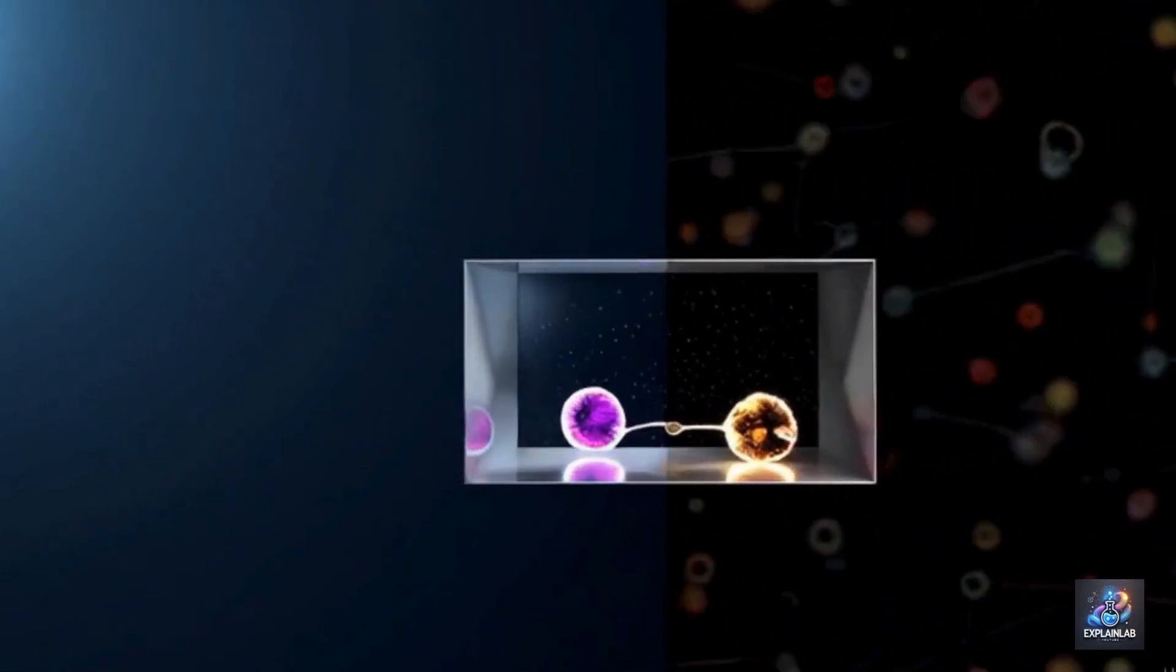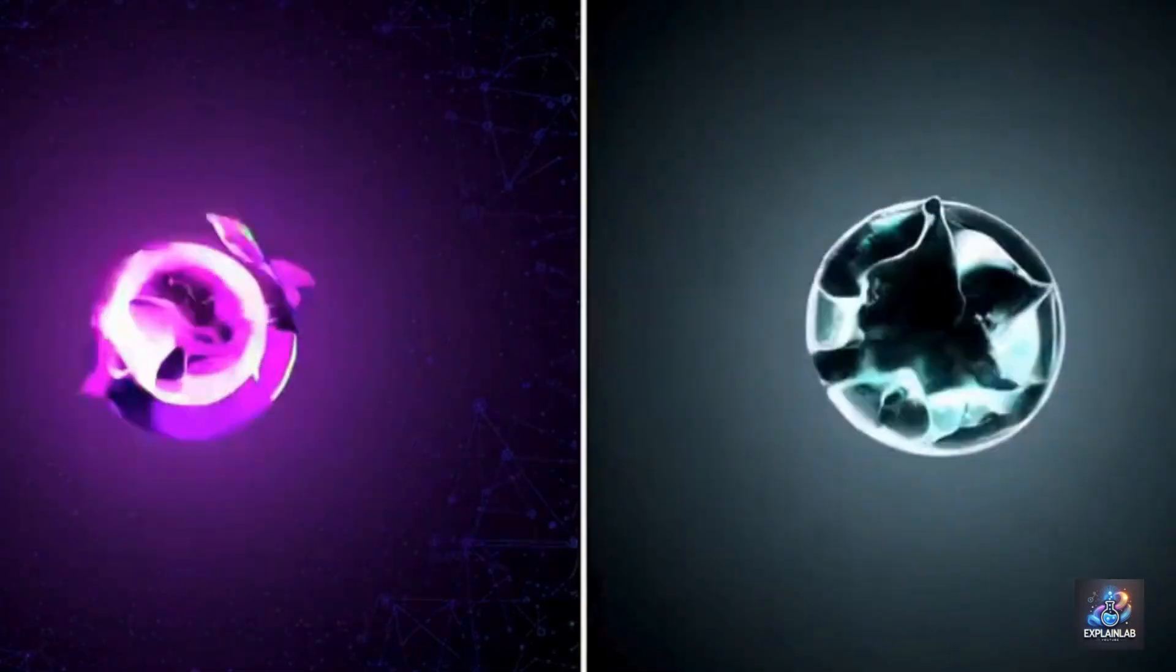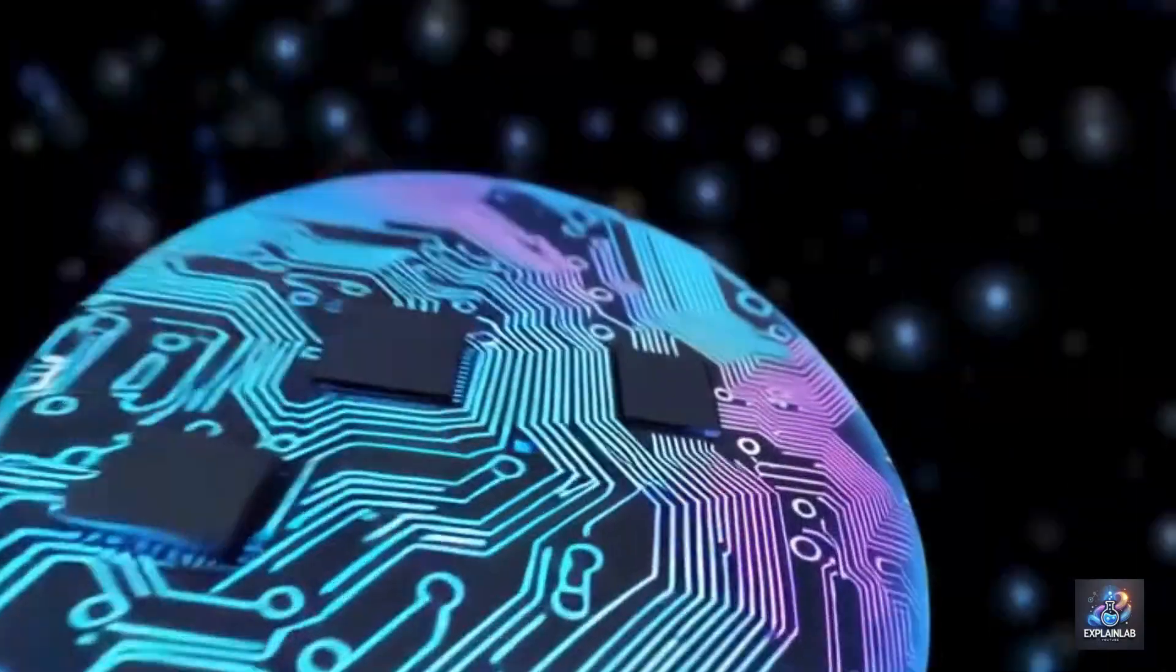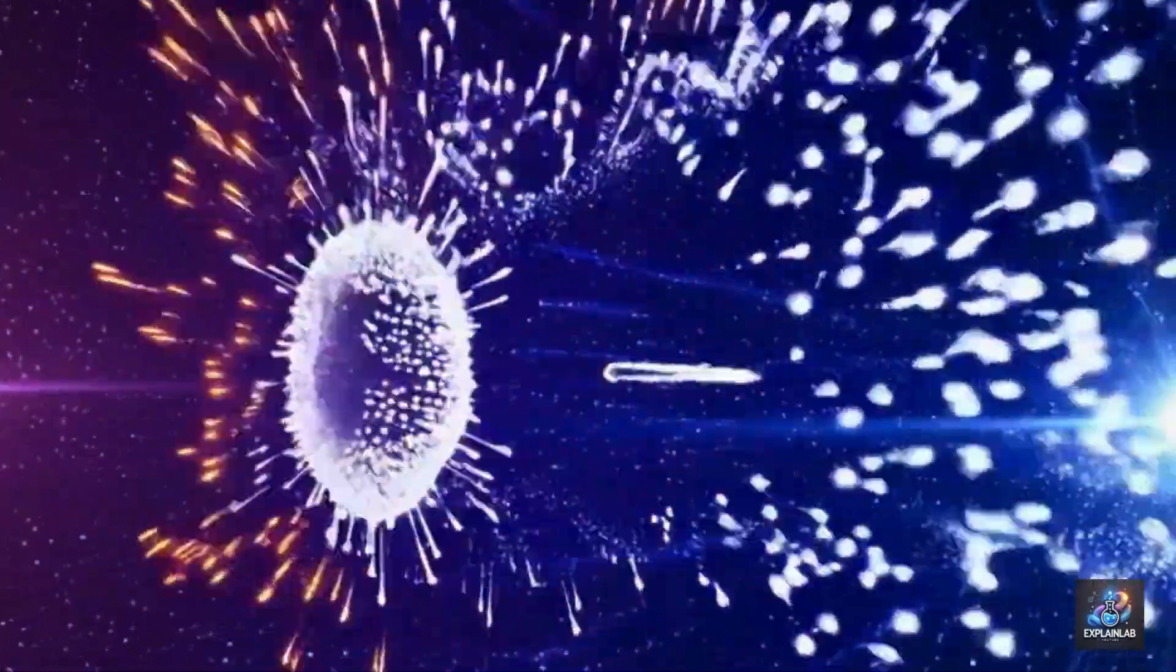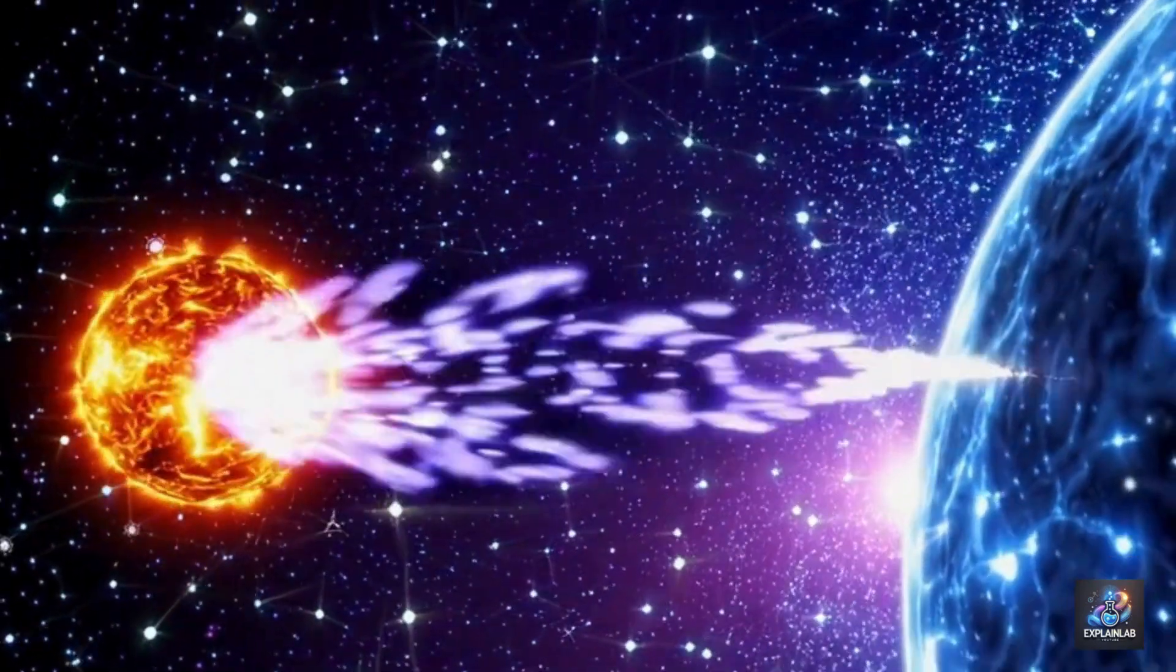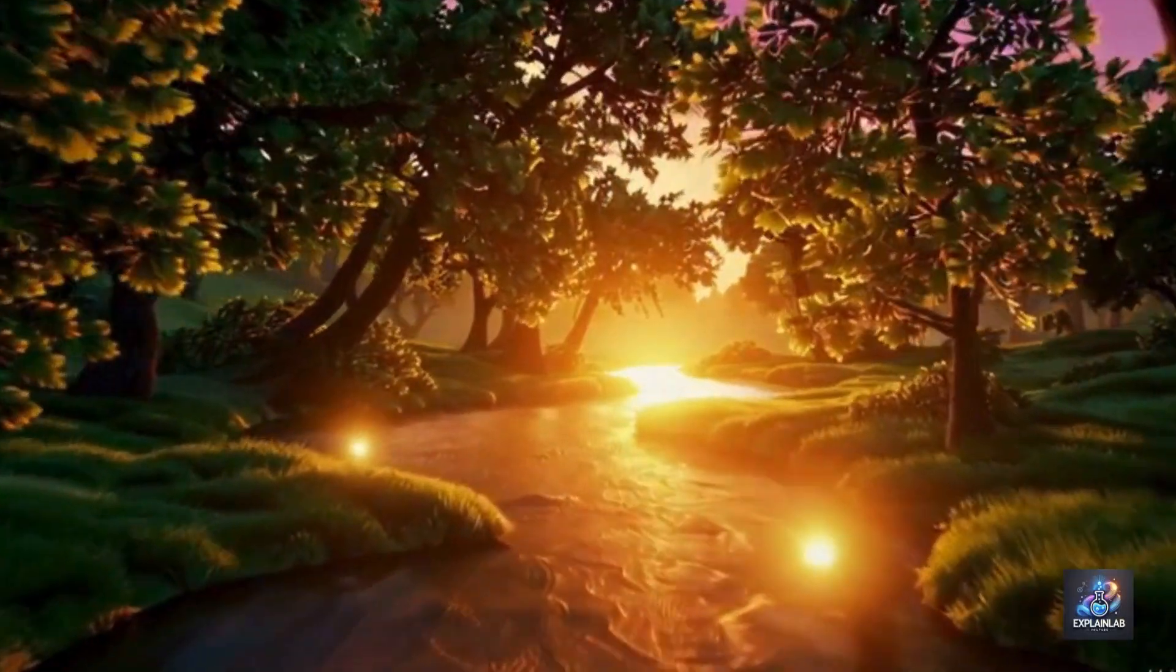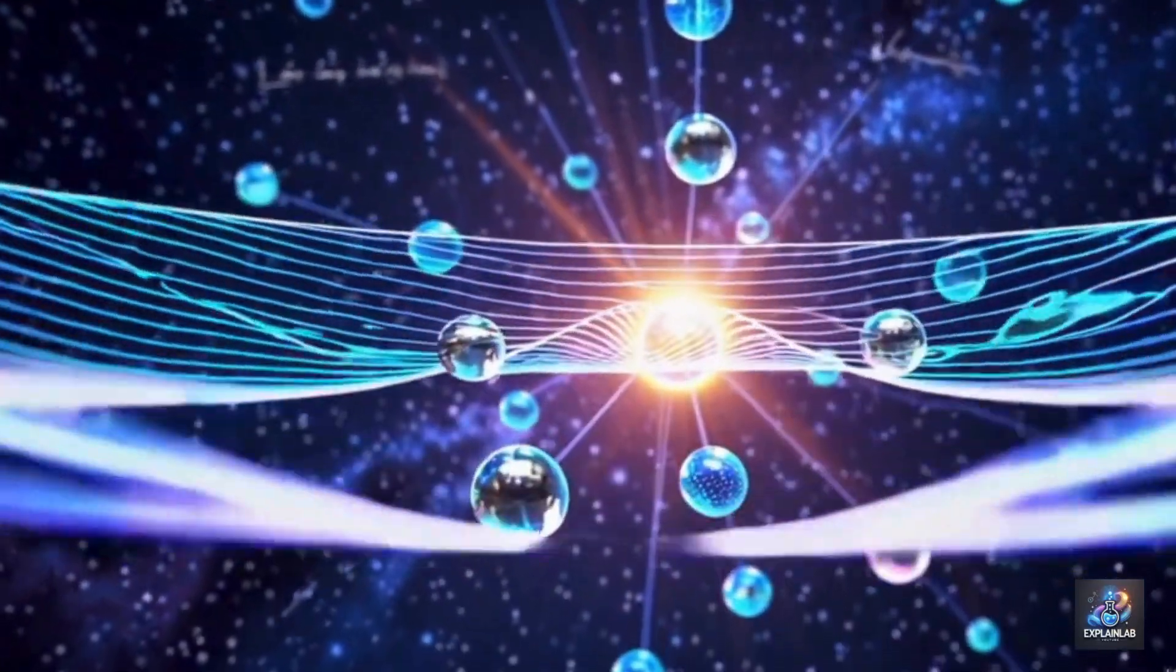In the everyday world, yes. But in the quantum world, the cat exists in this superposition of states, both alive and dead, until we open the box and observe it. Wait. So just by looking inside the box, we force the cat to choose whether to be alive or dead. That's the gist of it. In quantum mechanics, observation or measurement plays a crucial role in determining the state of a system. It's as if the act of observing collapses all the possibilities into a single outcome. That's kind of spooky.